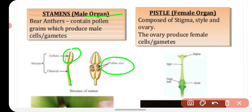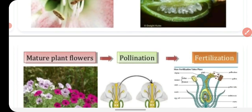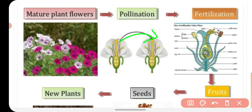Now we will talk about sexual reproduction. In flowers, the male reproductive organ is the stamen, and pollen contains the male gametes. The female organ is the pistil or carpel, which has three parts: stigma, style, and ovary. Inside the ovary are ovules, which are the female gametes. When plants are mature and flowering, pollination occurs — the transfer of pollen from the anther to the stigma — so that fertilization can take place.